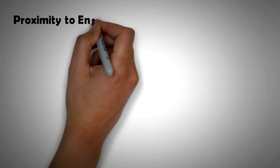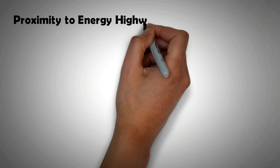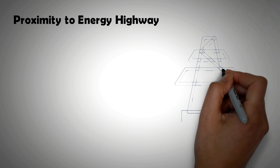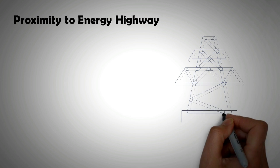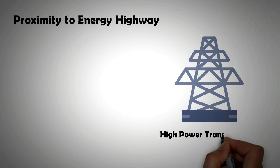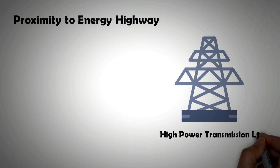The second factor to consider is the proximity to energy highways. If wind turbines are to be located far away from population centers which they are to feed, then it should be ensured that their location is in close proximity to energy highways or high power transmission lines. If not, then the added cost of transmission of electricity from the wind farm can become prohibitive.